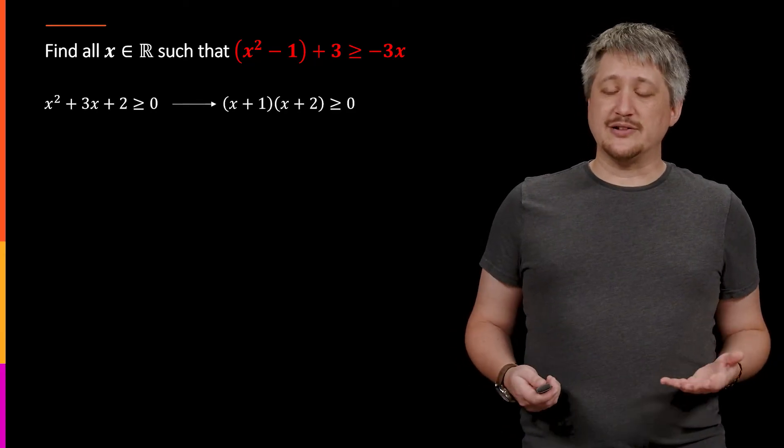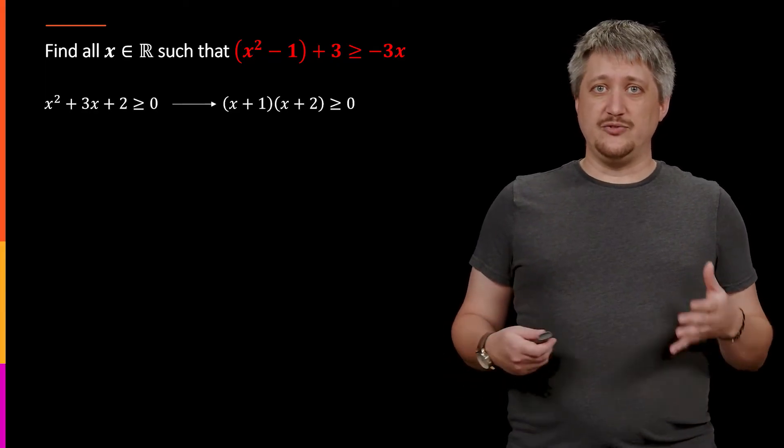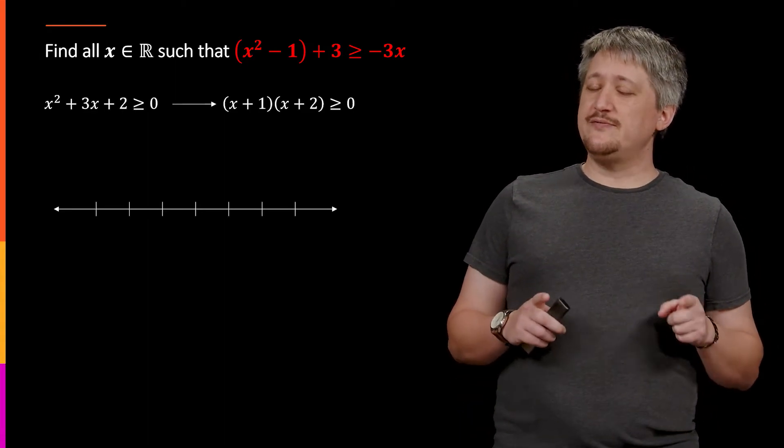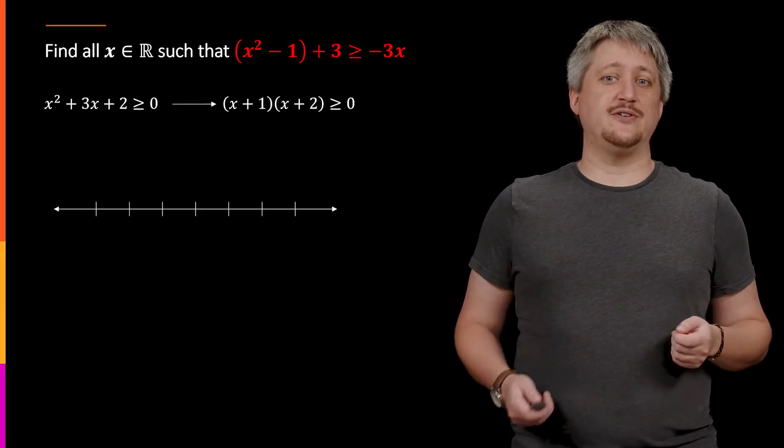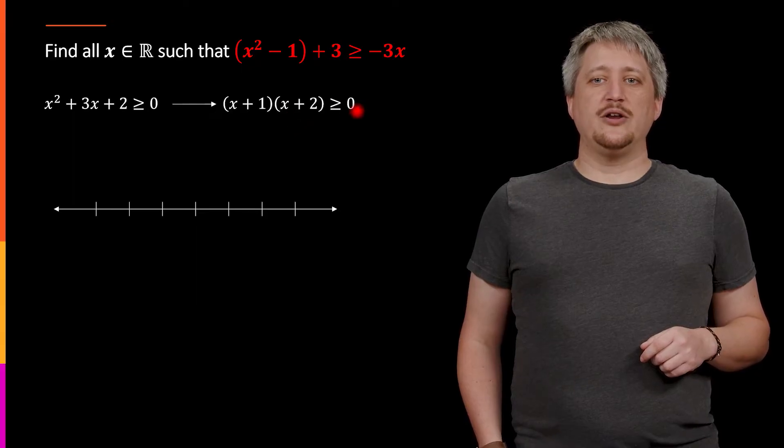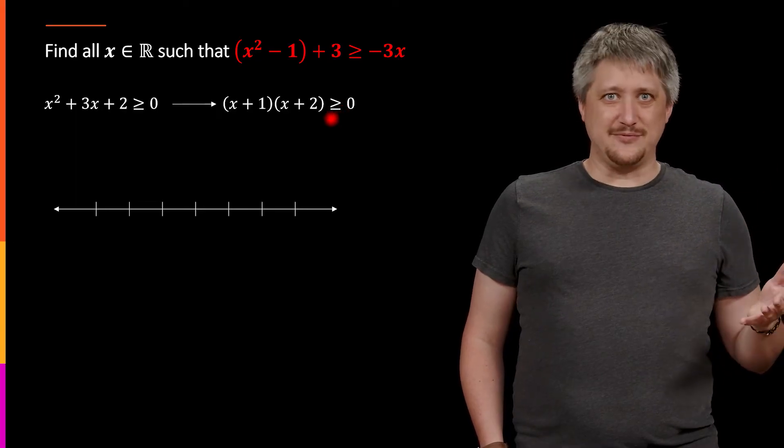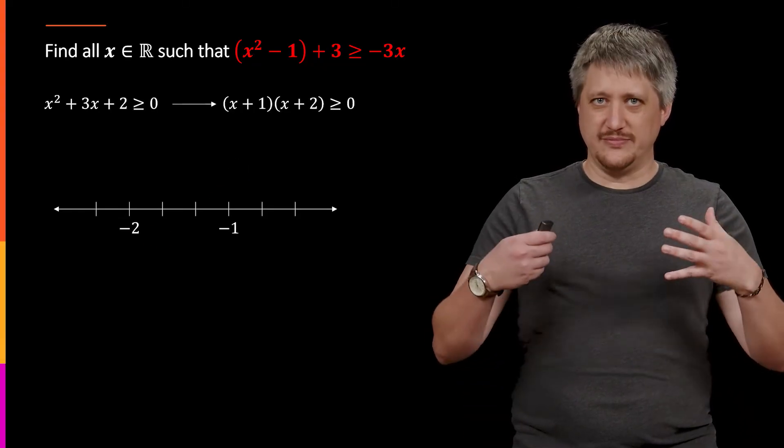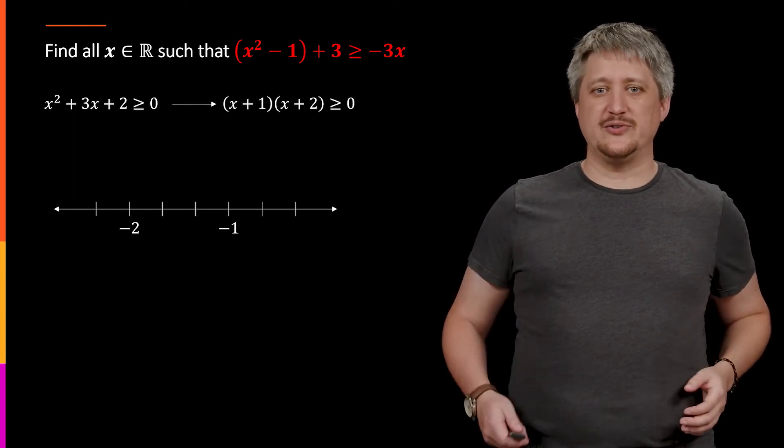And if this were an equality, not an inequality, then I would try to factor in order to find the zeros. So I'm going to do basically the same thing here. I'm going to factor this thing. And the good news is I can factor pretty cleanly. So this is going to be x plus 1 times x plus 2, and it's still greater than or equal to 0. Now, I'm going to draw in a number line, but this isn't for the solution set, because it's not really clear what the solution set is here.